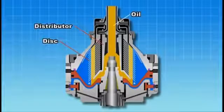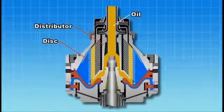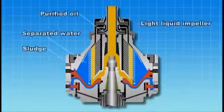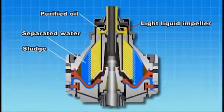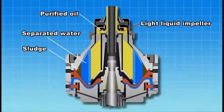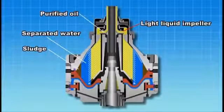Oil enters into the oil inlet and is introduced into the disk via the distributor. The separated water and sludge are forced to the periphery of the bowl. The purified oil moves inside between the disks and is discharged from the light liquid impeller.